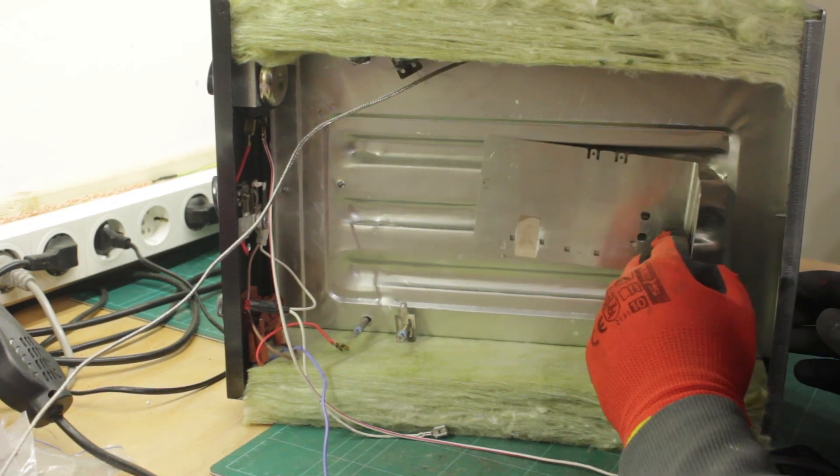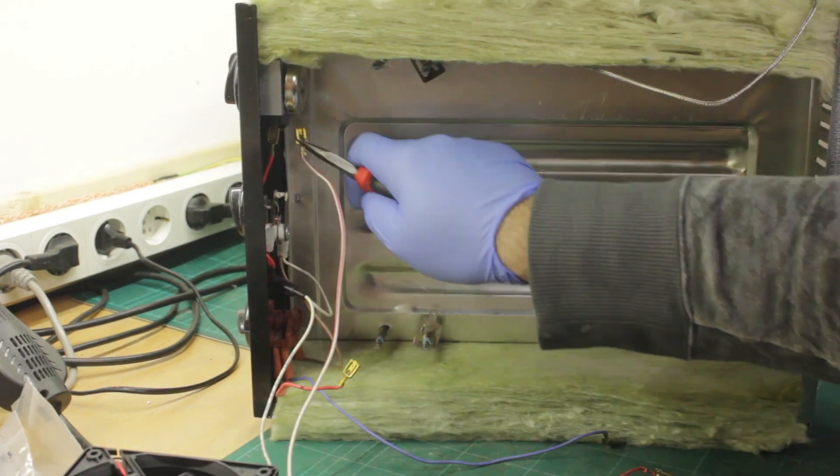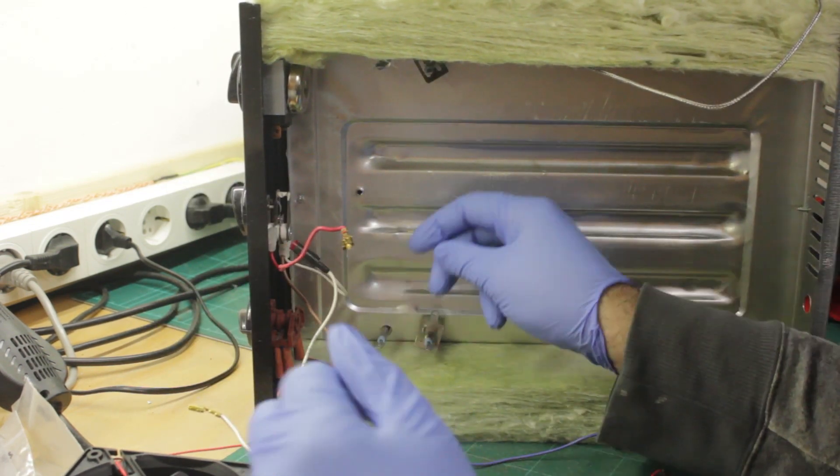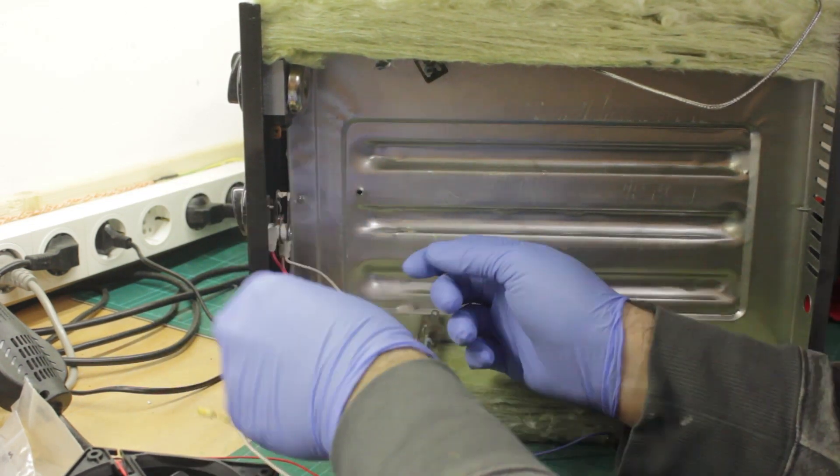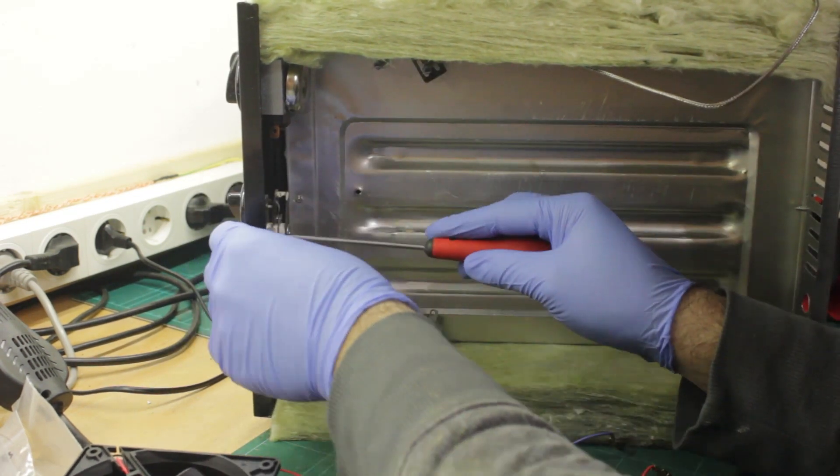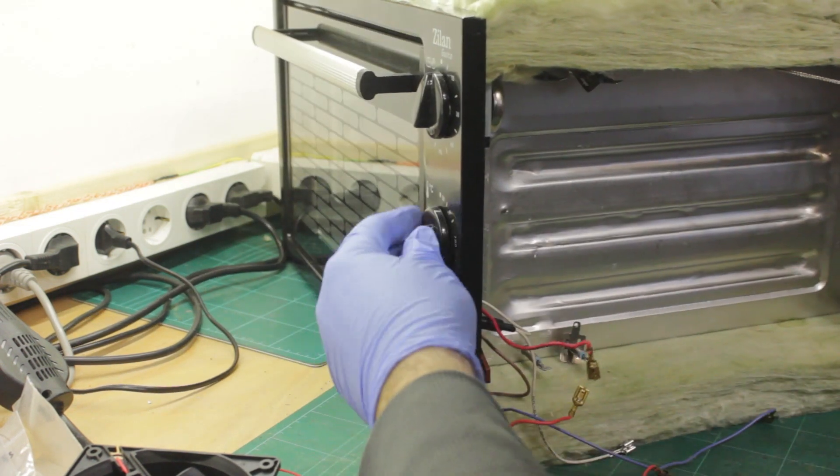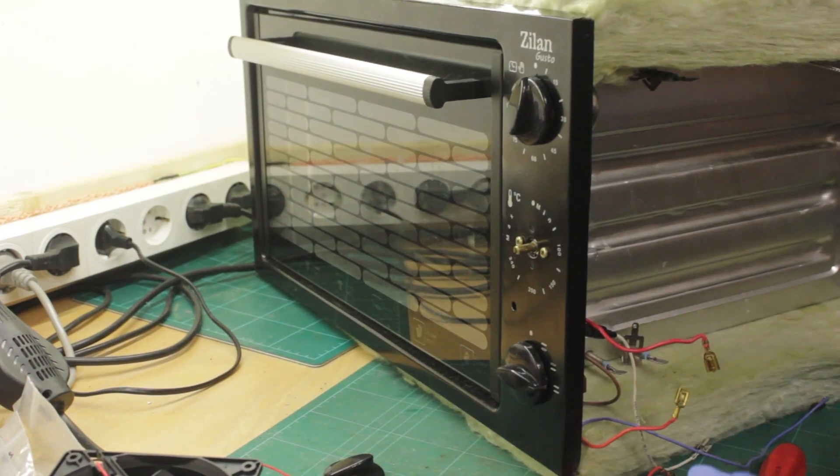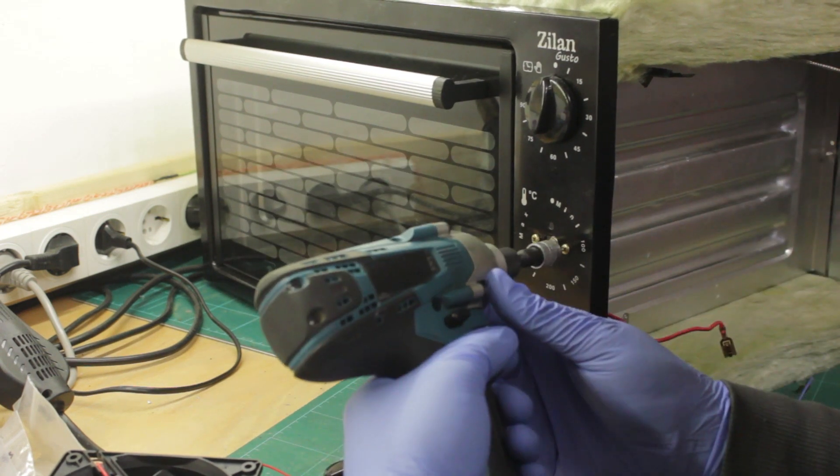I then decided on how to mount a fan and the components on the side of the oven. I removed the temperature selection knob so that I will have a place to insert the LCD screen.